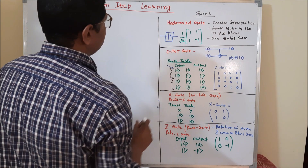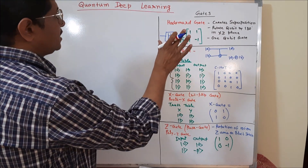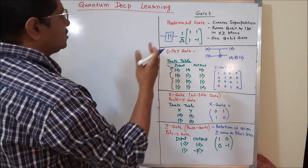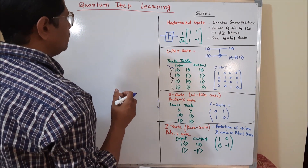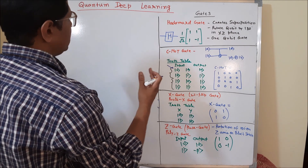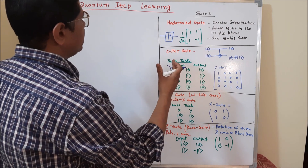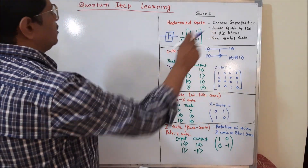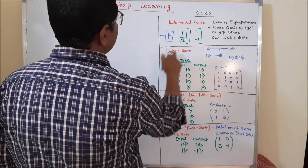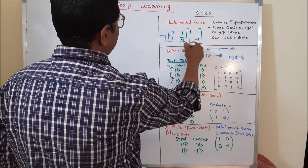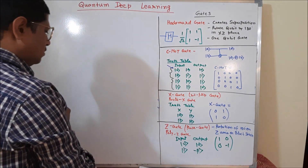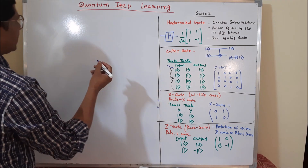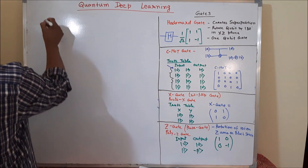The first one is the Hadamard gate. The Hadamard gate actually creates the superposition. I had already explained in the starting video what quantum superposition is. When you want such kind of quantum superposition related things in your circuit, then you have to use the Hadamard gate. The Hadamard gate is represented by H, and this is the Hadamard gate matrix.